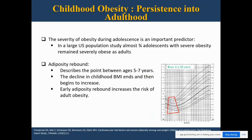The severity of obesity during adolescence is an important predictor. In a large U.S. population study, almost three quarters of adolescents with severe obesity remained severely obese as adults. I also wanted to touch on adiposity rebound — a concept unique to the pediatric world. It is a point between 5 to 7 years of age when the decline in childhood BMI ends and begins to rise. Early adiposity rebound increases the risk of adult obesity.